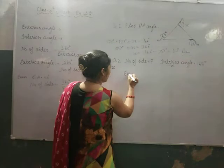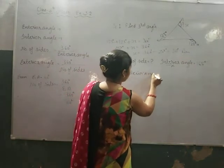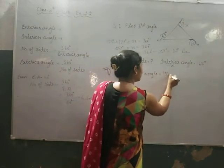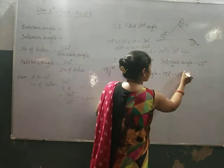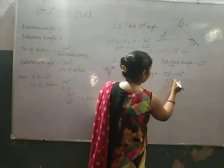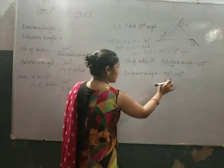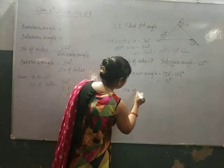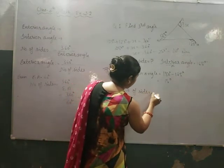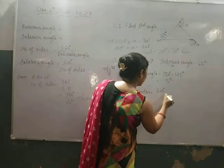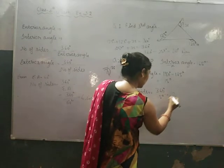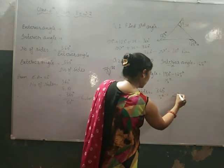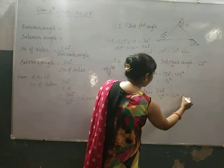Exterior angle 180 degree minus 165 equal to 15 degree. 15 degree number of sides equal to 360 degree divided by 15 degree. Would it be 24? This one answer we have the accessory point.